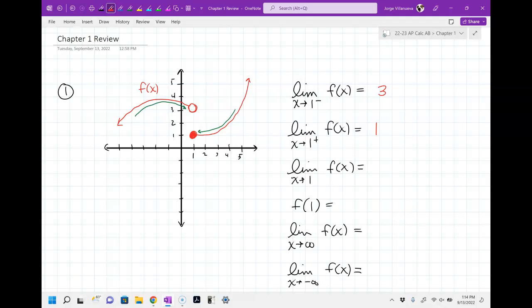What is my whole limit then? DNE, right? Because they don't match. What is f of 1? It's 1, okay? f of 1 is this piece right here.